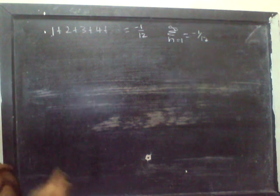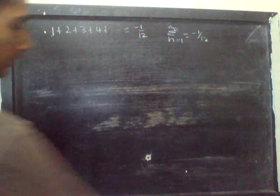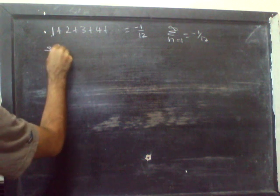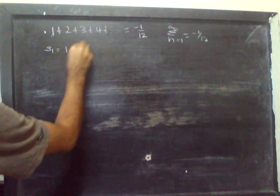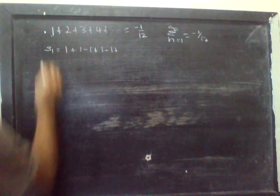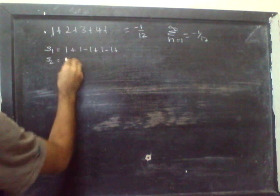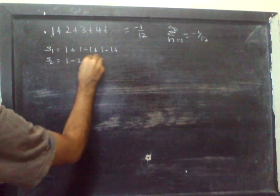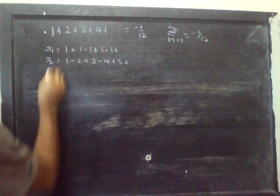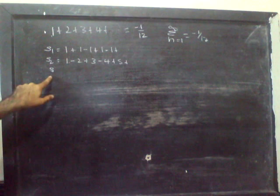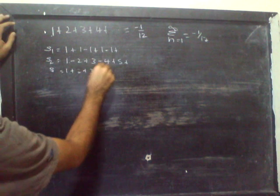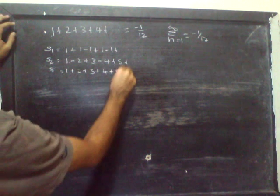So let it be proved in a while now. I'll take three sums. The first sum I'll call it S1: 1 minus 1 plus 1 minus 1 and so on. The second sum I have is 1 minus 2 plus 3 minus 4 plus 5 and so on. The third sum is the main sum that you're interested in: 1 plus 2 plus 3 plus 4 plus 5 and so on.